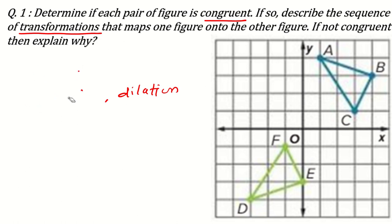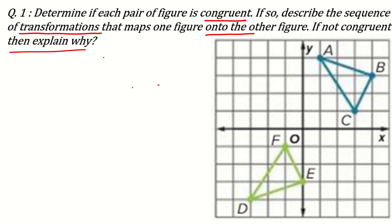Transformation maps one figure onto the other figure — they should overlap with each other, they should cover each other. If not congruent, then explain why. Now try to understand such questions. If they are not congruent, then it is finished because they cannot be mapped onto another one. But if they are congruent, then there are many ways to cover them — to map one figure onto another figure.